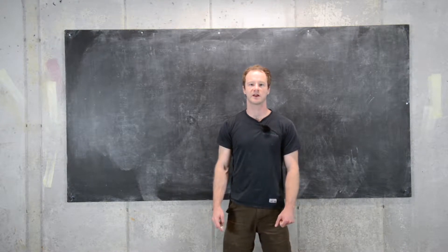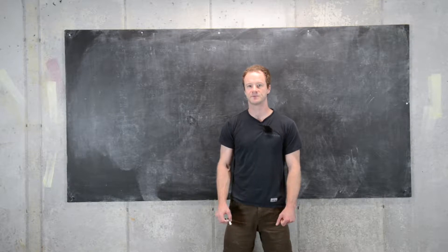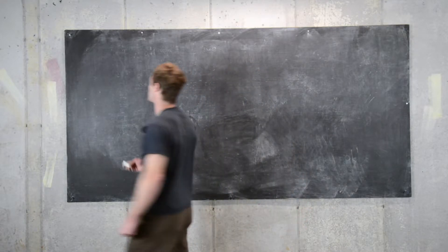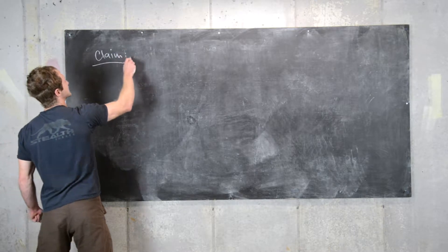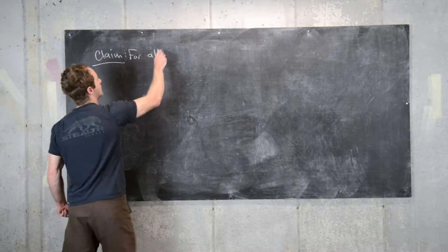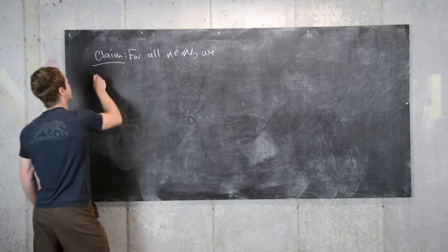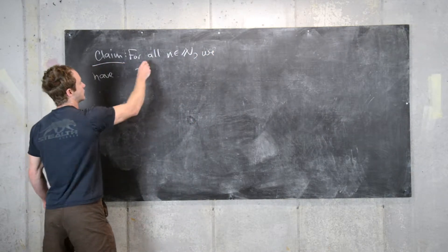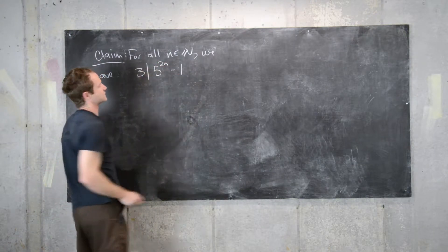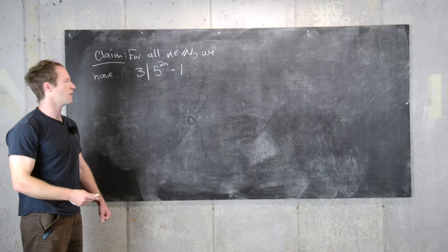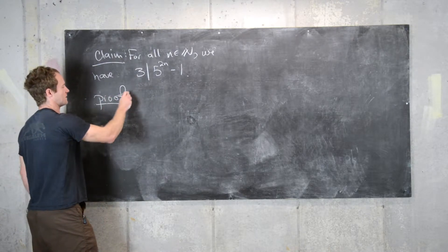In this video we want to look at a statement that can be proven using the principle of mathematical induction. The claim is that for all natural numbers n, three divides five to the two n minus one.